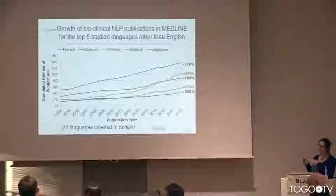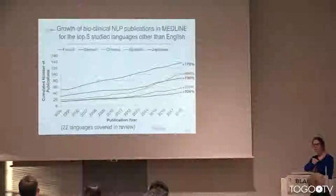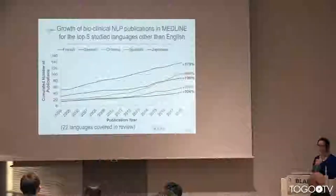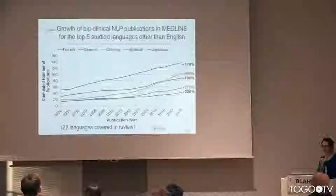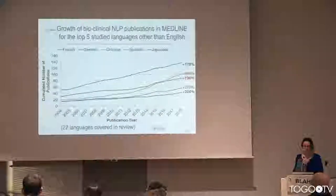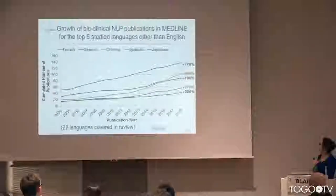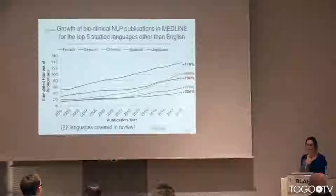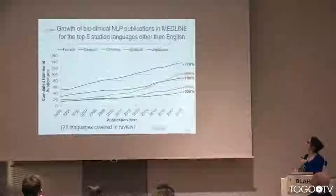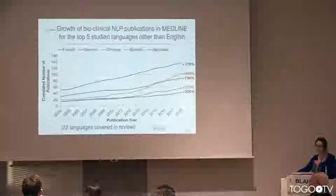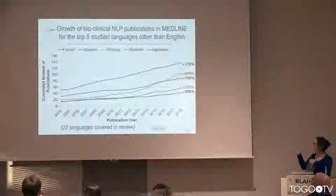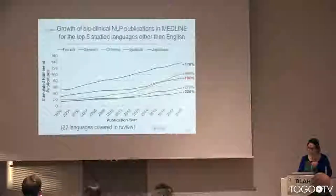Here is an overview of the growth of publications for the top five studied languages other than English: French, German, Spanish, and Japanese. We can see a steady growth for French, German, and Japanese. More recently, there has been a lot of interest and accelerated research for Chinese and Spanish in particular. Those are five of the 22 languages covered in the review I just mentioned.